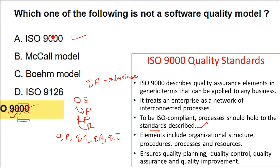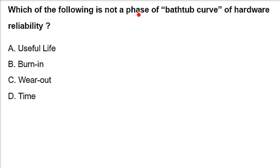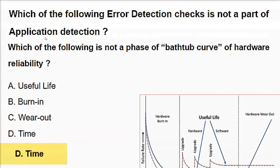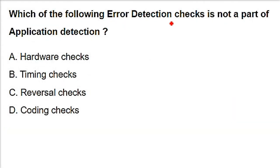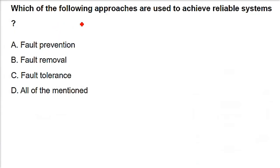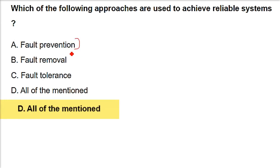Revisiting: which is not a phase of the bathtub curve of hardware reliability? The answer is time - reliability is defined with time, but time is the x-axis, not a phase. Which of the following error detection checks is not part of application detection? Hardware check, timing check, reversal check, and coding check are all valid error detection checks. To achieve a reliable system, fault prevention, fault removal, and fault tolerance are all applicable approaches.